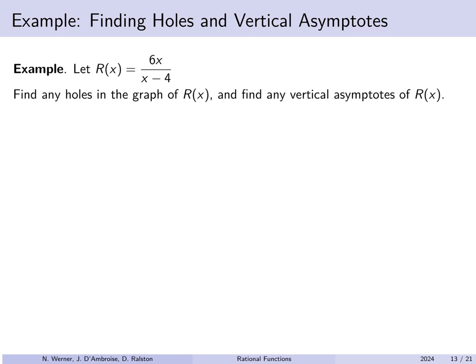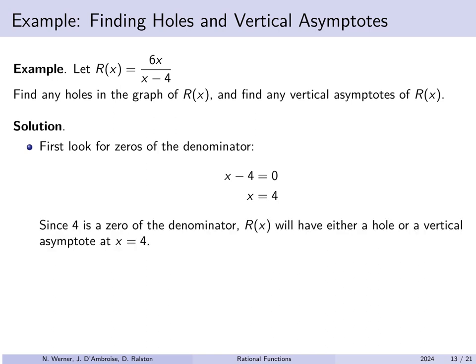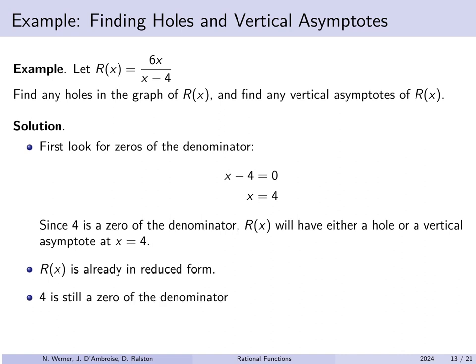For example, suppose r of x equals 6x over x minus 4. We set the denominator equal to zero: x minus 4 equals 0 gives x equals 4. So 4 is a zero of the denominator, meaning the function either has a hole or a vertical asymptote at x equals 4. Since r of x is already in reduced form — there are no shared factors to cancel — 4 is still a zero of the denominator. Therefore there is a vertical asymptote at x equals 4, and there are no holes.